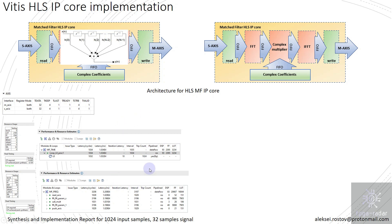Regarding the number of DSP blocks: as mentioned, the number of DSP blocks equals the number of multipliers, which equals the number of taps. For 32 samples of the input signal, that is 32 complex multipliers at 3 DSP blocks each, giving 96 DSP blocks — or 93 here because 3 DSP blocks were optimized away, since some complex coefficients are equal to 0 or 1.